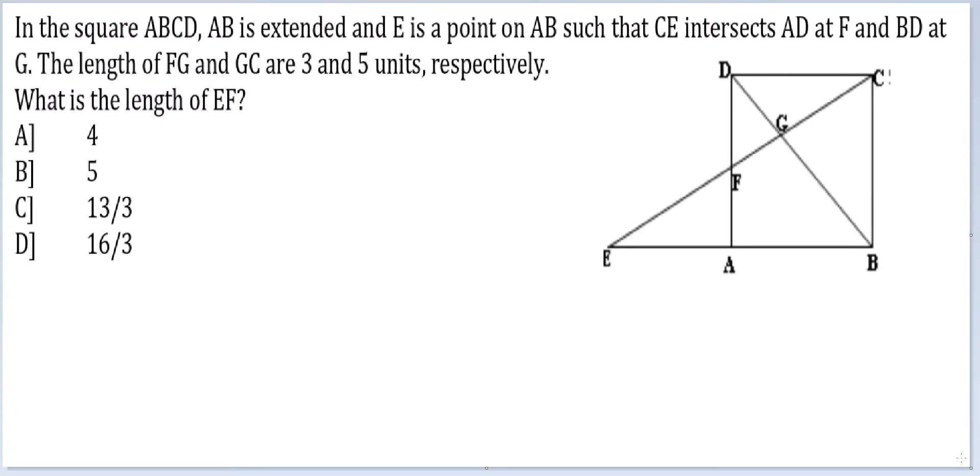Let's look at this question. In the square ABCD, AB is extended and E is a point on AB such that CE intersects AD at F and BD at G.